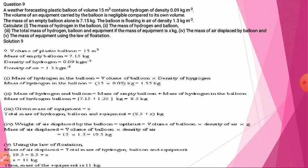The mass of air displaced equals volume of balloon multiplied by density of air — because upthrust equals volume times density times g, and mass equals weight divided by g, so g cancels, leaving only volume times density. Volume of balloon is 15 and density of air is 1.3, so mass of air displaced is 19.5. Using the law of flotation, mass of air displaced equals total mass of hydrogen, balloon, and equipment, so we can find x — mass of equipment equals 11 kg.